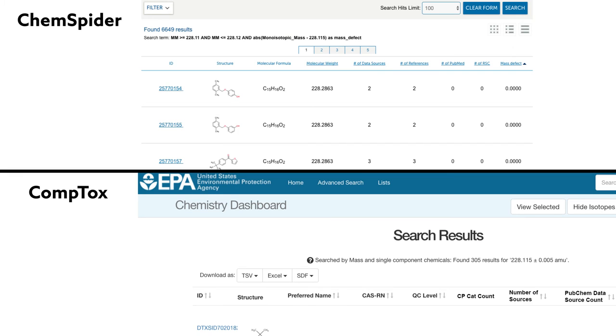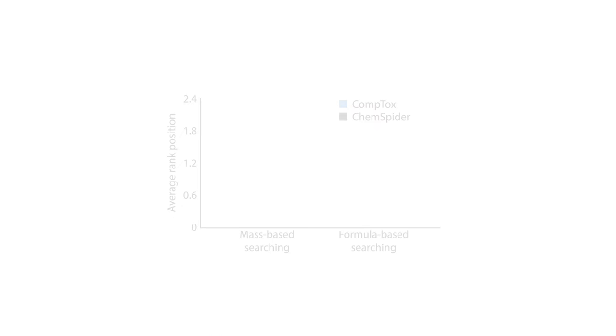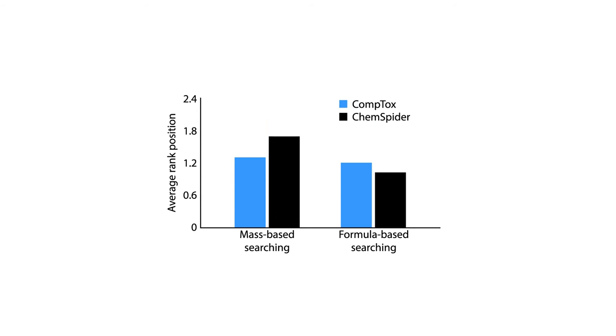As a result, the researchers saw that although the CompTox dashboard generated fewer results for a given compound, the target candidate consistently ranked closer to the top than in ChemSpider.